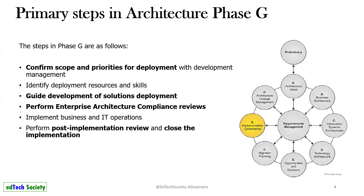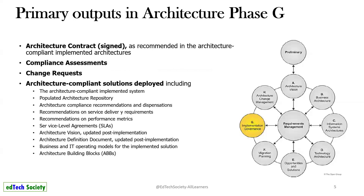The final architecture contract is signed here — that is the main output. Don't get confused between the draft contract and the signed contract. The contract is signed only in Phase G, not in Phase A or preliminary — those are the draft contracts. The signed architecture contract is the main output of Phase G, along with the architecture-compliant implemented architecture and the compliance assessments.